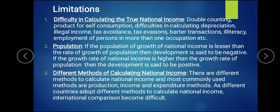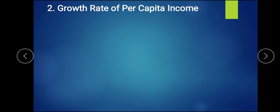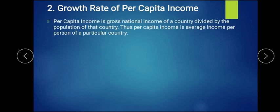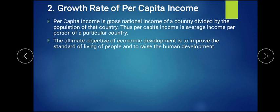Let us move to the next topic — growth rate of per capita income. Per capita income is calculated by dividing the gross national income of a country by its total population. This gives us the per person average income of a particular country, which helps identify the standard of living and how much money a person has to spend per year. The main objective is to improve the standard of living, as economic development means overall progress and welfare.